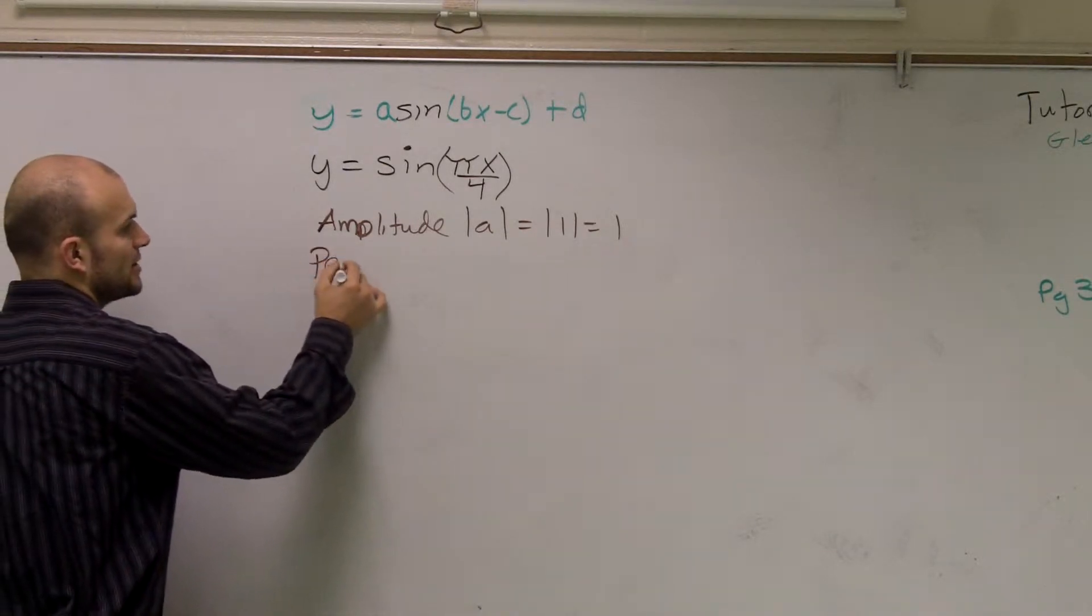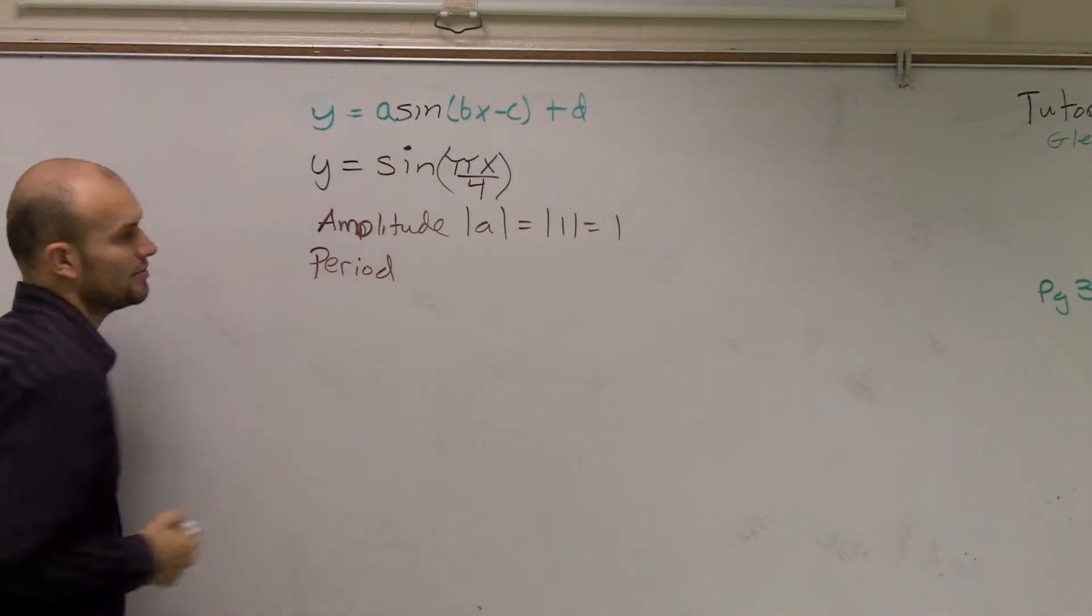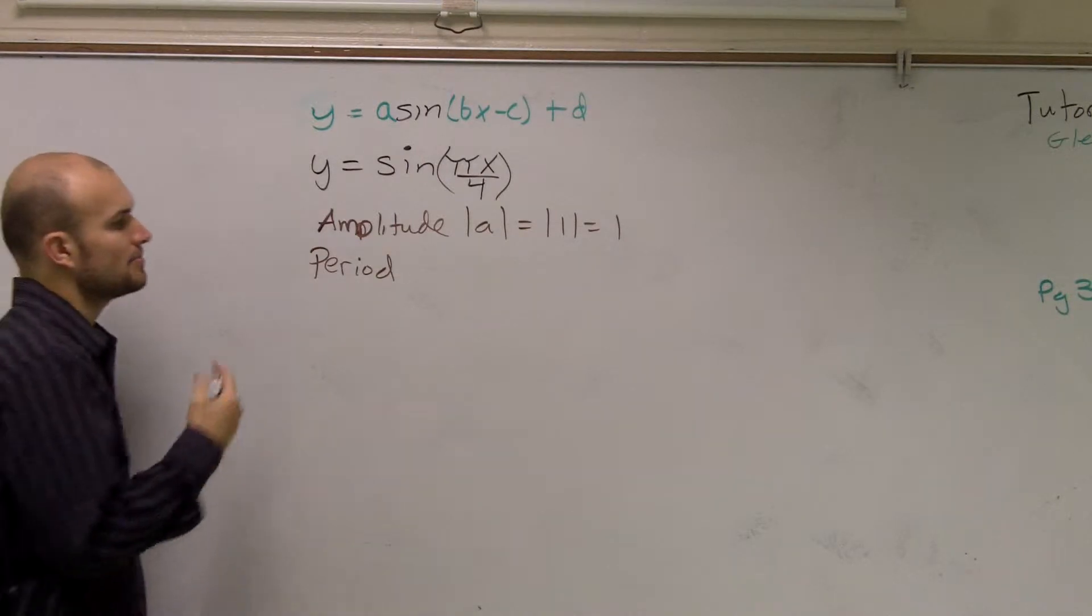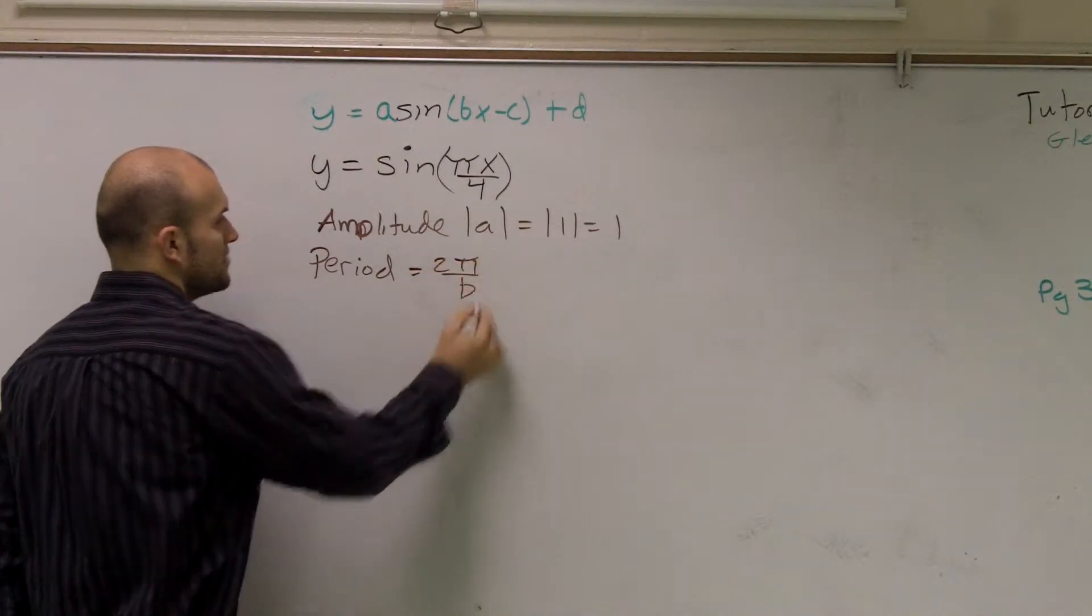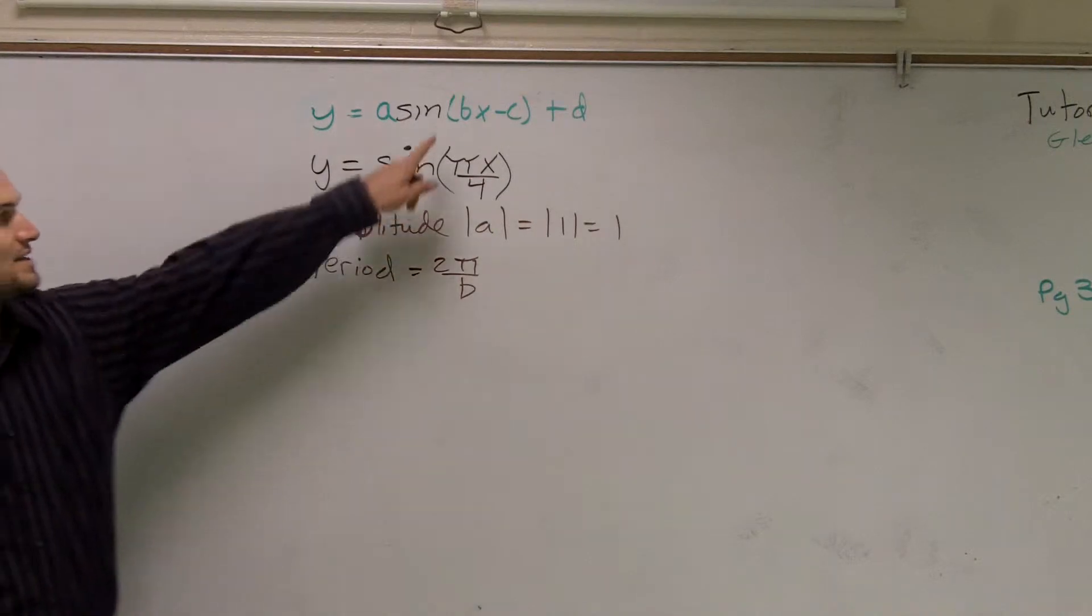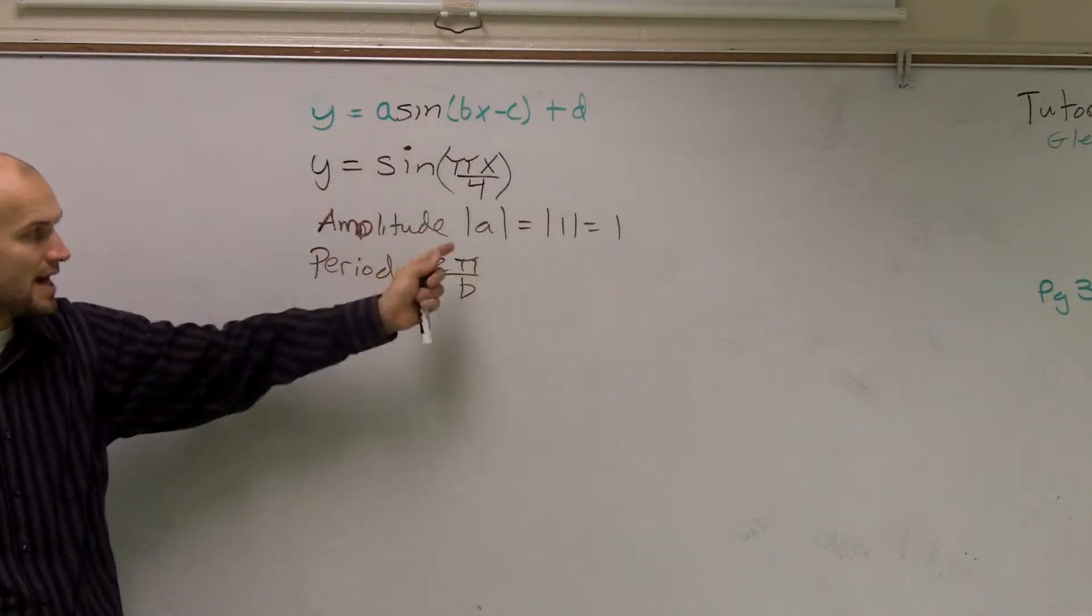Then I need to figure out the period. This one's going to be a little bit tricky. The period, remember, is 2π over b, whereas b is your number in front of x.